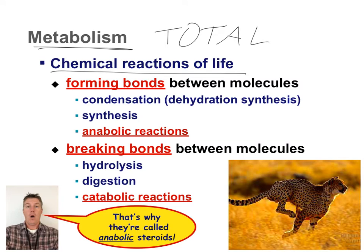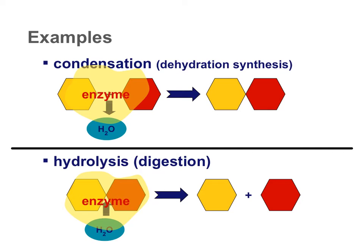We're either using energy to build things up from simpler compounds to more complex compounds and molecules, or we're releasing energy by breaking down molecules from more complex into their simpler components. The two examples of these chemical reactions are condensation and hydrolysis. Condensation is where you take a water molecule out to join two molecules. With the help of an enzyme, we take water out in order to bond two things into a more complex, more organized molecule. Hydrolysis is the opposite — we take a more organized compound and use water to split it into two simpler products.